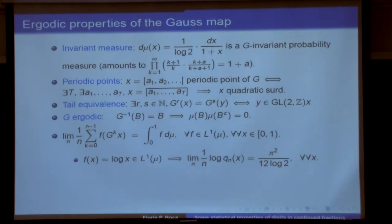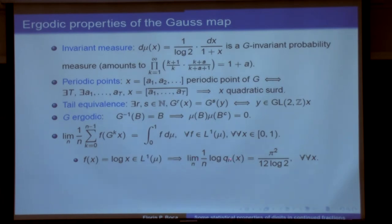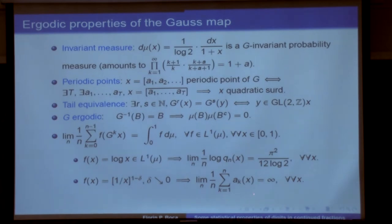If we make good choices for the function f in L¹ — and L¹ of μ is the same as L¹ of Lebesgue measure since they are mutually absolutely continuous — we can gather information about the behavior of the denominators. For almost every x, the denominator grows to infinity exponentially fast. This involves the famous Lévy–Khinchin constant, π²/(12 log 2), which is just an integral. Also, for almost every x, the arithmetic sum of the first n digits goes to infinity. For a periodic point this cannot hold — so a different kind of analysis is involved in the study of the distribution of digits.